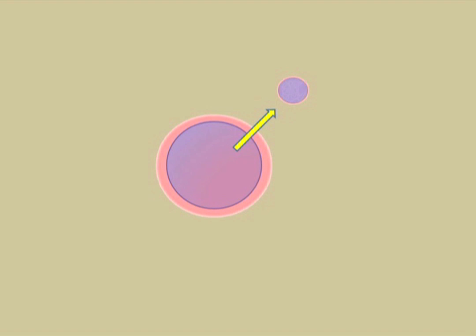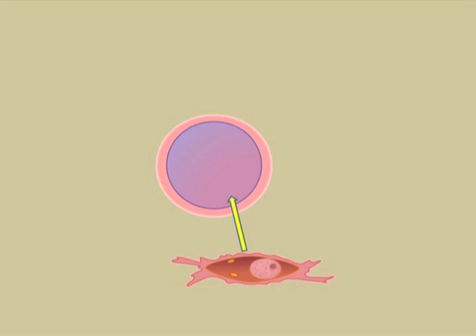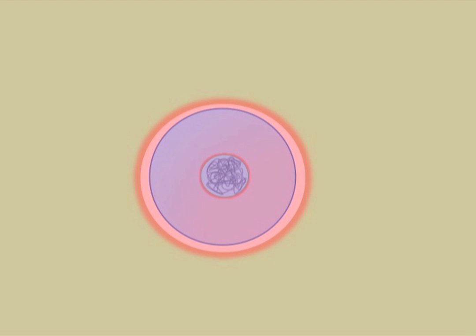The team started by taking an unfertilized human egg and removing the nucleus which contains the DNA. They then took a skin cell called a fibroblast and inserted its nucleus into the emptied egg cell. Within 30 minutes the cell had fused to generate an embryo, and it's then zapped with electricity to kick off the growth.